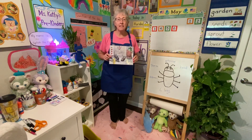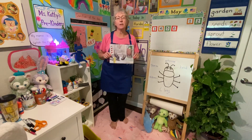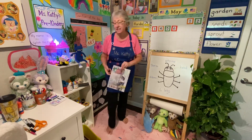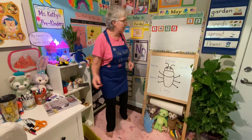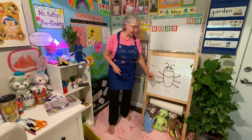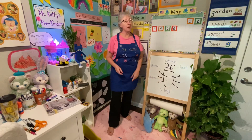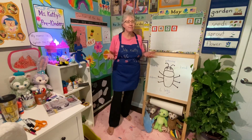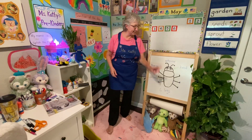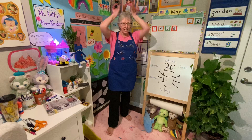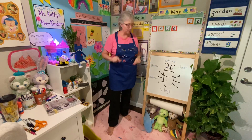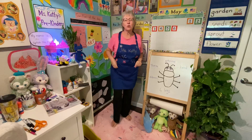Hi boys and girls! Today I read the story 'Tumble Bugs and Hairy Bears' about insects, and I just want to talk a little bit about insects. Insects have a head, a thorax, and an abdomen. How many legs do they have? They have six legs — a head, thorax, abdomen, six legs, and antennae. Antennae means two antennas: one, two.